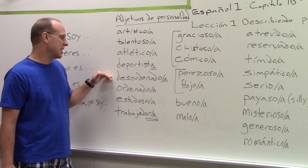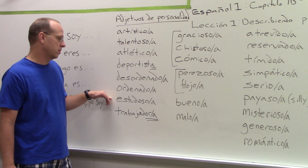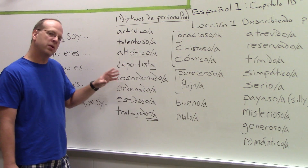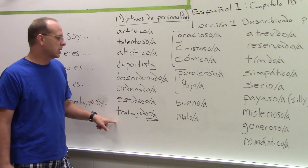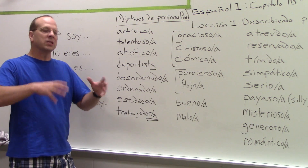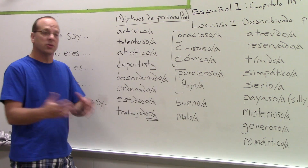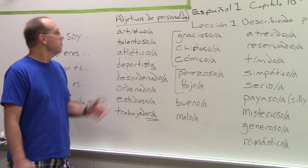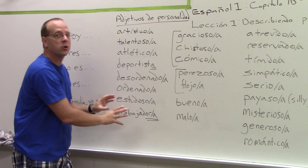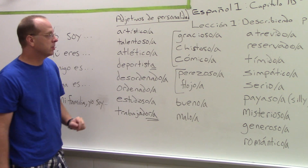Desordenado. Ordenado. Estudioso. Hopefully everybody understood all these even though I only explained one of them. Then we have trabajador, trabajadora. A trabajador is a worker, a trabajadora is also a worker — male, female. But if you're using it as an adjective it means hard working. So trabajador, trabajadora.